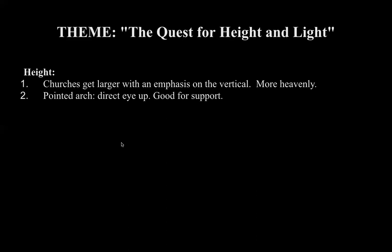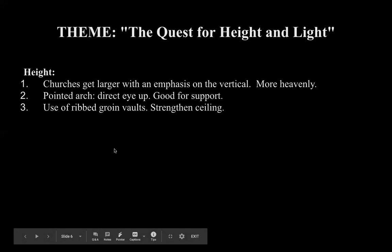They strengthen the ceilings with ribbed groin vaults. Groin vaults are the meeting of two barrel vaults. They put a thin skeleton structure — ribbed groin vaults — on the edges to strengthen the ceiling. These ceilings were incredibly heavy; if you remember when Notre Dame caught on fire, the heat melted the lead roof. So they needed all these structural elements to hold up those heavy ceilings.